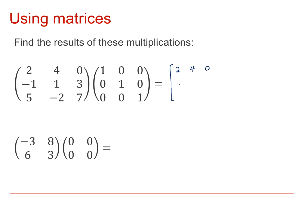Second row first column, minus 1 plus 0 plus 0 is minus 1. Second row second column, 0 plus 1 plus 0 is 1. Second row third column, 0 plus 0 plus 3 is 3.